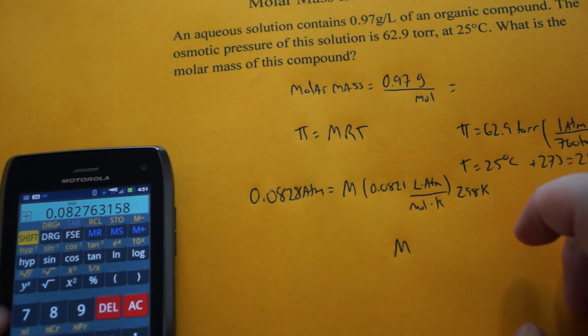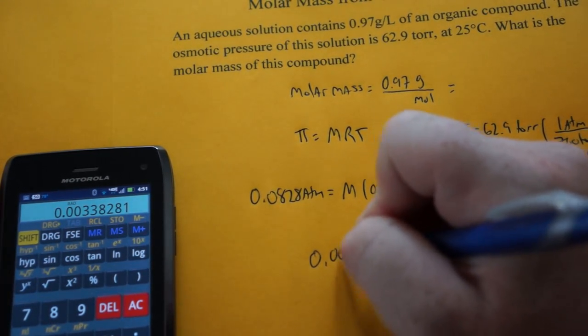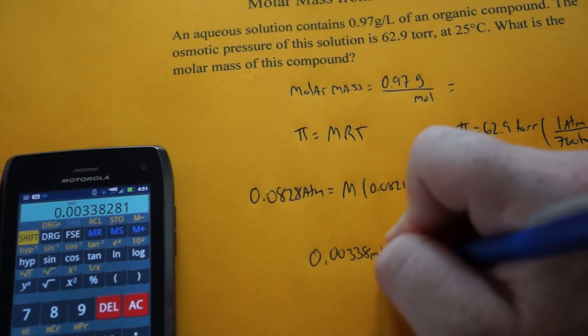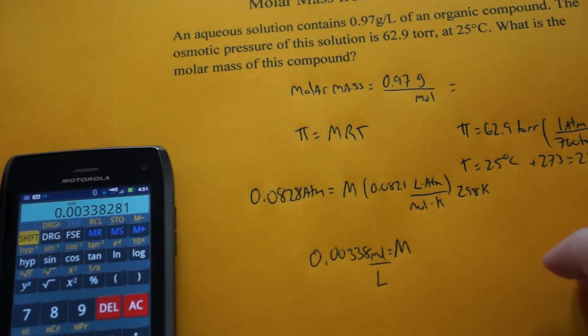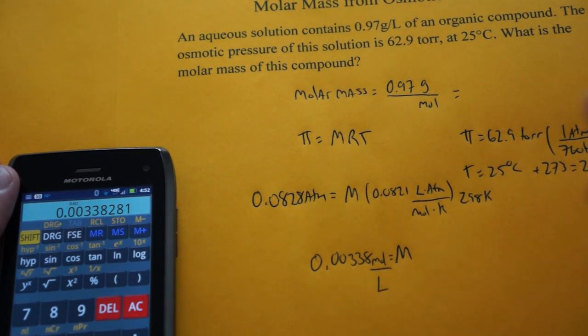Molarity is going to equal 0.00338 moles per liter. Now, remember up here, this is grams per liter. This is moles per liter. We have our moles.